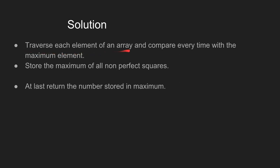In the first step, we have to traverse each element of an array and compare every time with the maximum element. Then we will store the maximum of all non-perfect squares, and finally we will return the number stored in the maximum.